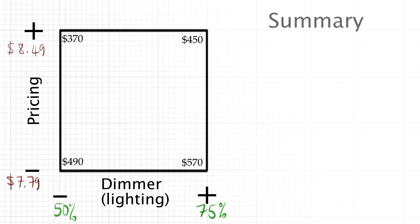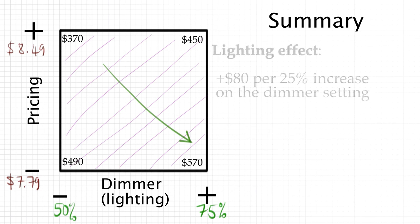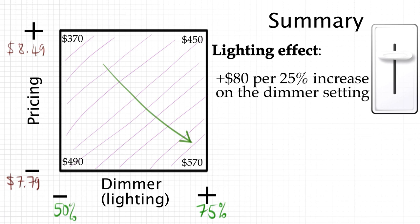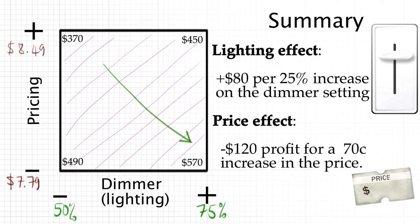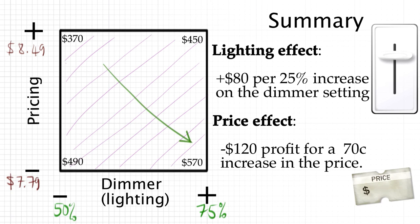So let's recap. The effect of lighting is that it increases our outcome variable. Our profit goes up by $80 when we move from 50% on the dimmer to 75% on the dimmer. So it's a good thing to use more light in our store. Pricing though has an interesting effect. It shows that our profit decreases by $120 when we raise our price from the lower price to the higher price.